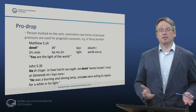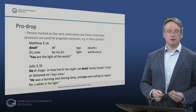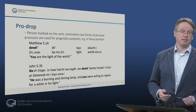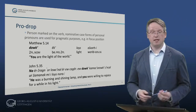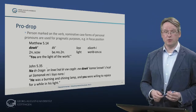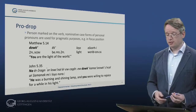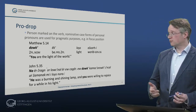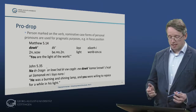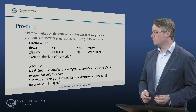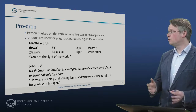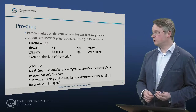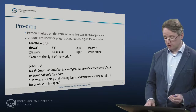Armenian is a pro-drop language, marking person on the verb, and the nominative of personal pronouns is used for pragmatic purposes — when they are in focus position or emphasized. For example: 'dugek luis ashrari' — you are the light of the world — or in contrasting contexts: 'na er tschrak' — he was a burning lamp — and 'duk kamitsaruk zensal' — you were willing to rejoice for a while in his light.